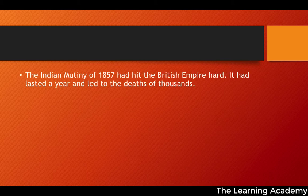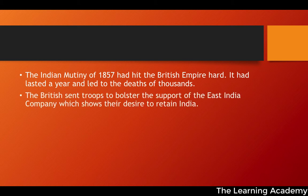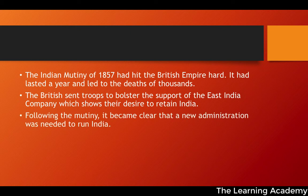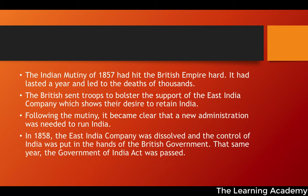In 1857, the Indian Mutiny occurred. It lasted about a year and led to thousands of deaths. We can deduce from the policies put in place by the British Empire following the Indian Mutiny just how important India was to them. The British sent troops to bolster support for the East India Company, showing their desire to retain India. Following the Mutiny, it became clear that a new administration was needed to run India, and in 1858 the East India Company was dissolved.